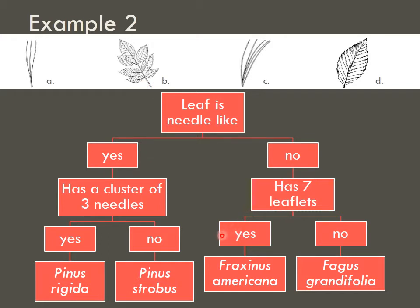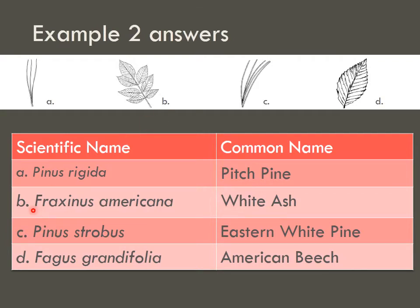Therefore, this is the scientific name of our unknown. We can check right here — yes, that was what we came up with for B. The common name is white ash. This is how you use two different formats of the dichotomous key. I want to stress that when you are using a dichotomous key, there is always only two choices.